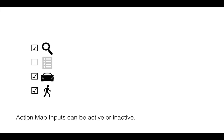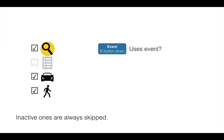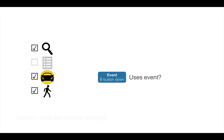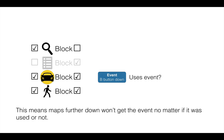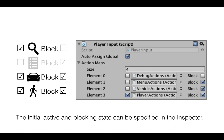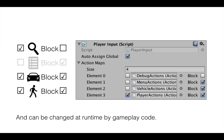Action map inputs can be active or inactive — inactive ones are always skipped. So if the menu actions are inactive, they get skipped entirely. Action map inputs can also be set to block subsequent maps, meaning maps further down won't get the event regardless of whether it was used or not. For example, when the vehicle action map is active, we never want any events sent to the player actions, so we use this block feature. The initial active and blocking state can be set in the inspector and changed at runtime by gameplay code.